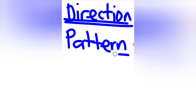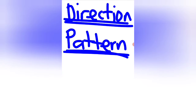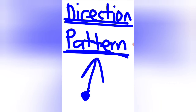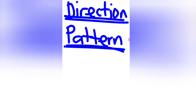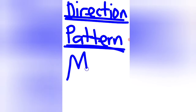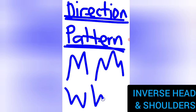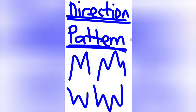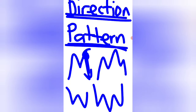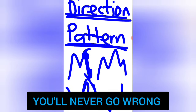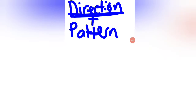When you have the direction of where the market is going — either up or down — the next thing you need is a pattern that tells you exactly where you are going to enter. The main patterns in the forex market are the W, the M, head and shoulders, and inverse head and shoulders. When you enter the market in the direction of these patterns, you will never go wrong, especially if you have the direction correctly.